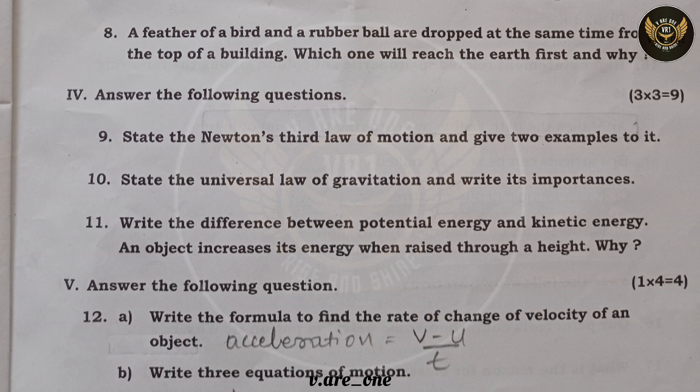Question nine: state Newton's third law of motion and give two examples. Newton's third law: for every action there is an equal and opposite reaction. Example one: when you hit a wall with a ball, it bounces back with the same force. Example two: during swimming, when you push water downwards, the water pushes the body forward with the same force.